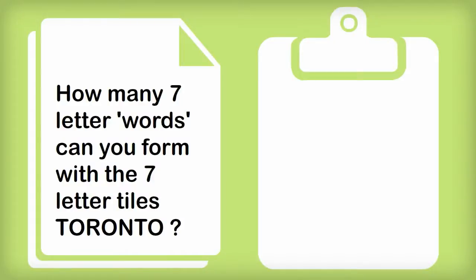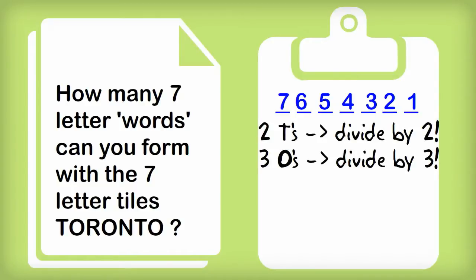If you could do that problem, let's go to Canada and see how we go with this one. How many seven letter words can you form with the seven letter tiles T, O, R, O, N, T, O? Well, because we're forming a seven letter word, we'll need seven dashes. And then we'll go through and starting from the left go seven by six by five by four by three by two by one. But remember we need to divide for duplicated letters. So we've got two T's, so we better divide by two factorial. And we've got three O's this time, so we better divide by three factorial. So the answer is seven factorial divided by two factorial times three factorial. And that gives us an answer of four hundred and twenty.